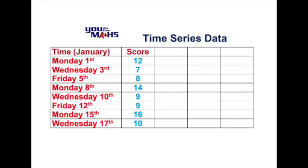In this table we've got two basic sets of data. We've got the time, which follows a cyclical pattern — we can see it goes Monday, Wednesday, Friday, and then it continues for the next week in weeks of January. And we've got a matching score; in this case the score represents number of parcel deliveries from a particular business.